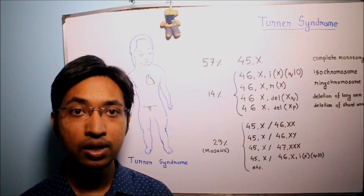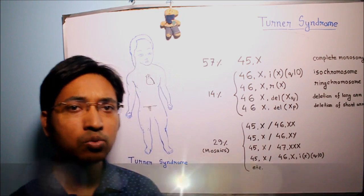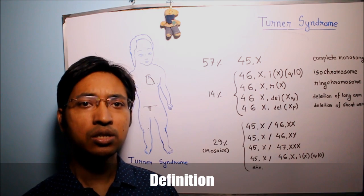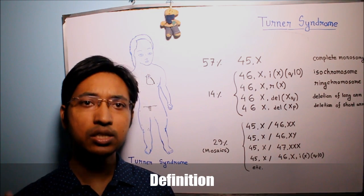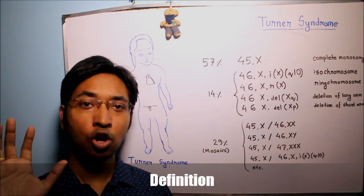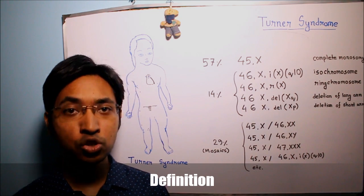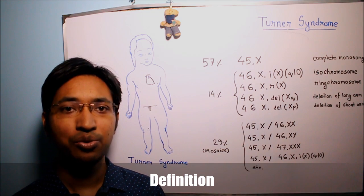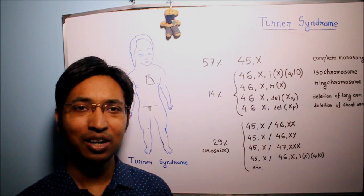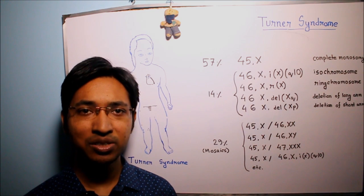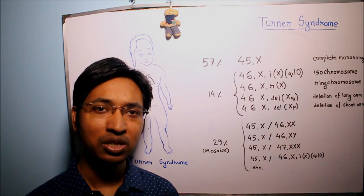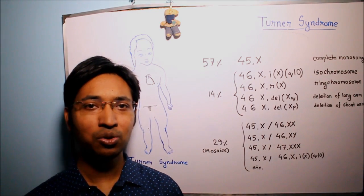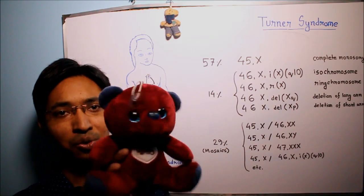Now we will move on and talk about the definition of Turner syndrome. As written in your textbook, Turner syndrome can be defined as the genetic disorder resulting from complete or partial monosomy of X chromosome, characterized primarily by hypogonadism in females. I will explain this definition line by line.